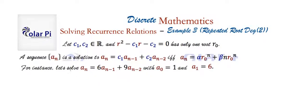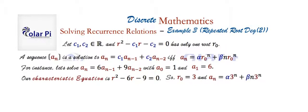First, for this degree 2 recurrence relation, the characteristic equation is going to have to be this quadratic. And clearly, this quadratic has only one root, and that root is 3, right? So that means r sub 0 is 3.